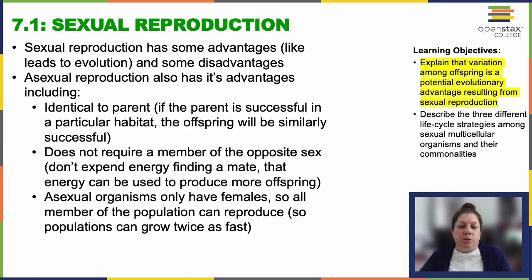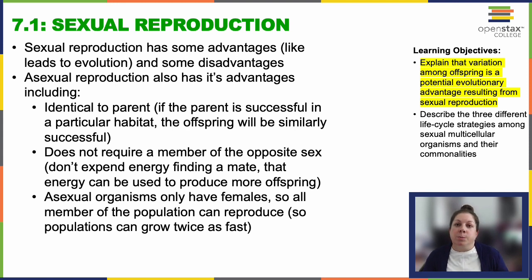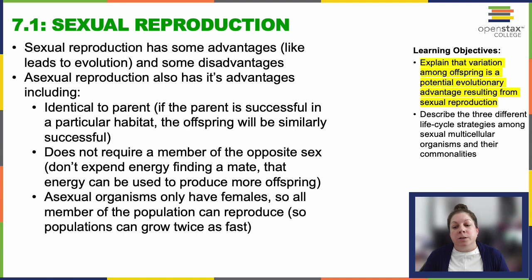Why is sexual reproduction so prevalent? This is one of the key questions in biology with research that spans not just decades, but centuries, really. A probable explanation lies in the role of variation in offspring's survival and their ability to reproduce. Asexual organisms rely solely on mutation for variation — mistakes. They're relying on mistakes.